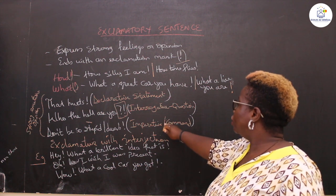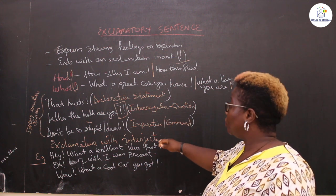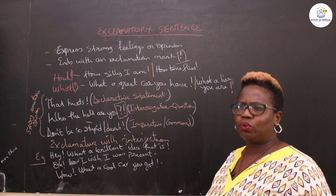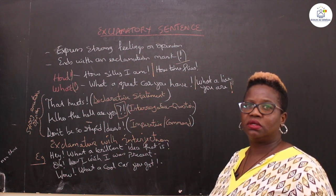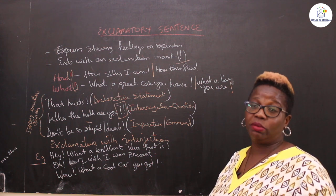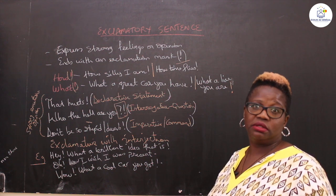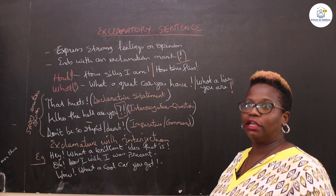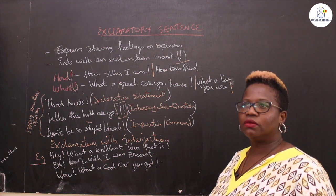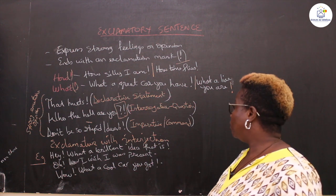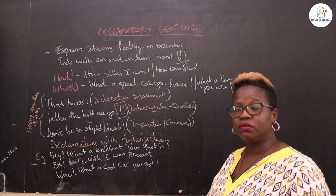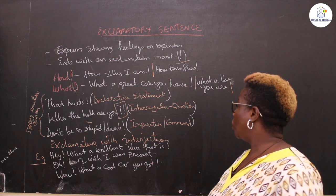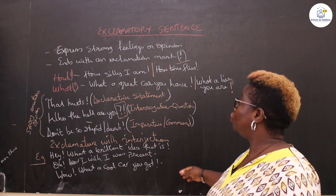The last form is imperative. An example would be 'Don't be so stupid!' — it's telling someone to stop doing something foolish. 'Don't be so silly! Don't be so dumb! Don't be so loud!' These are imperative commands, and they can also carry exclamation.